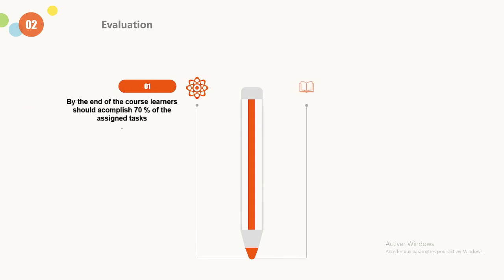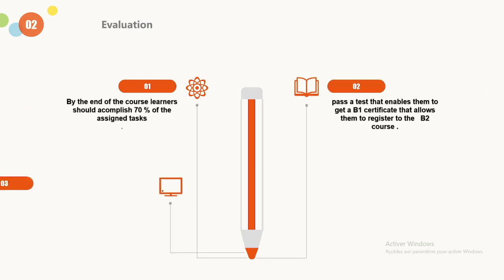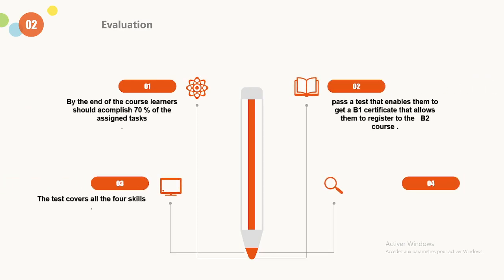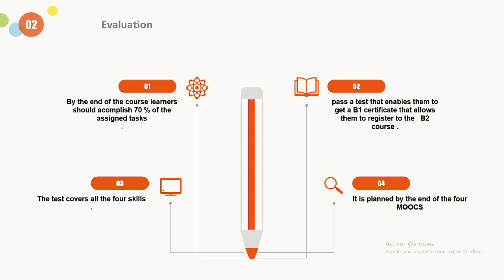By the end of the MOOC, the learners should accomplish 70% of the tasks assigned within the MOOC. They will have to pass a test that enables them to get a B1 certificate that allows them to register to the B2 course. The test covers all four skills — that is, reading, writing, speaking, and listening — and it is usually planned by the end of all the four MOOCs.